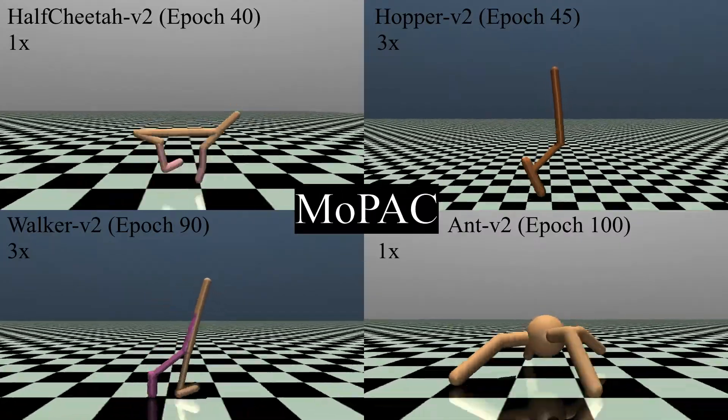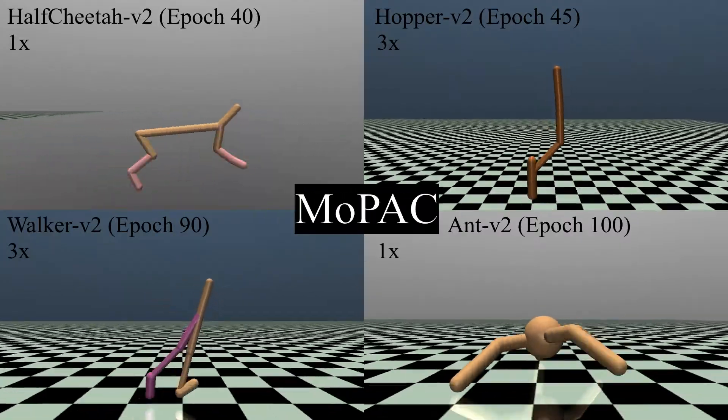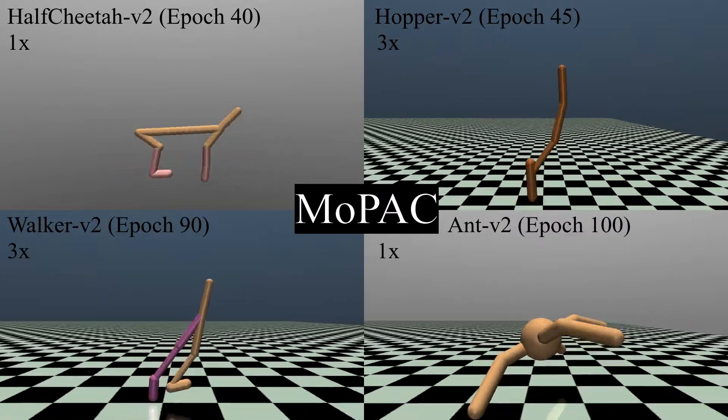The best policies of MOPAC for all four Mujoco environments tested in this work are now presented: the half-cheetah, the hopper, the walker, and the ant.